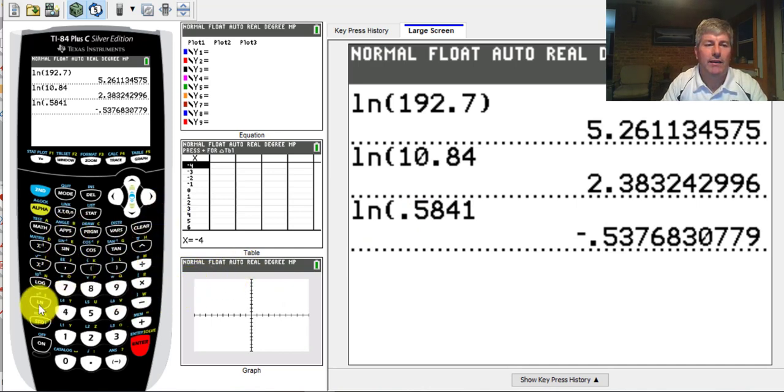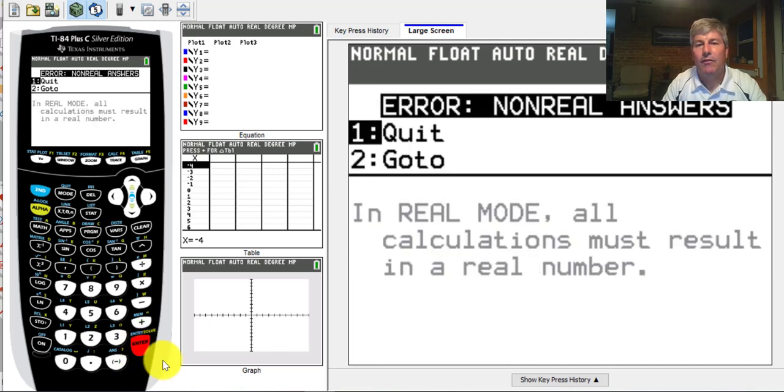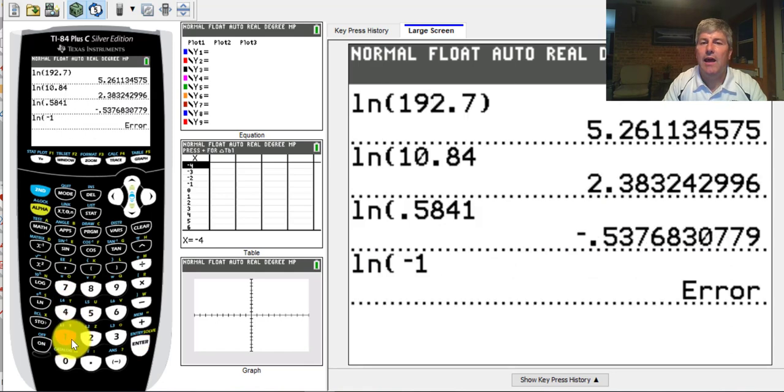Let's see if we can take the natural log of negative 1. That gives us a non-real answer. We can't take the natural log of a negative number, but that makes sense. We couldn't take the log of a negative number either. Since the natural log is just log base e, that totally makes sense.